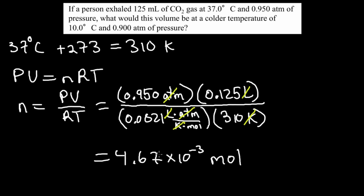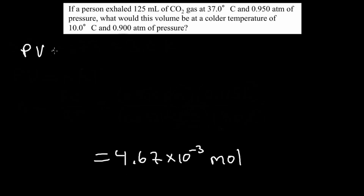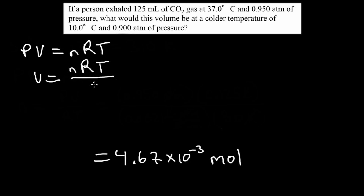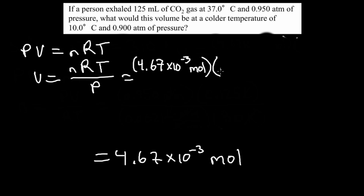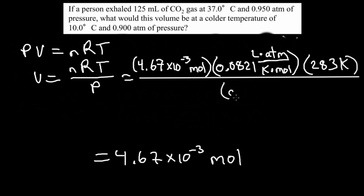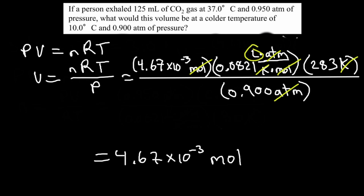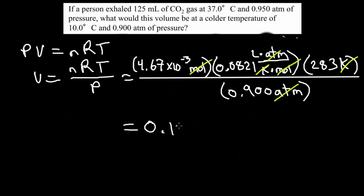Now rearrange the formula to find the new volume: V = nRT / P. Using n = 4.67 × 10⁻³ mol, R = 0.0821 L·ATM/(K·mol), the new temperature is 10°C + 273 = 283 K, and the new pressure is 0.900 ATM. After cancellations — atmospheres, moles, and Kelvin all cancel — we are left with liters. The answer is 0.12 liters.